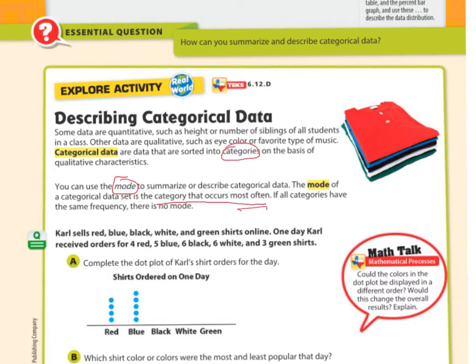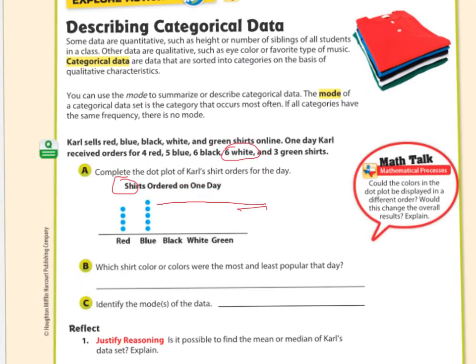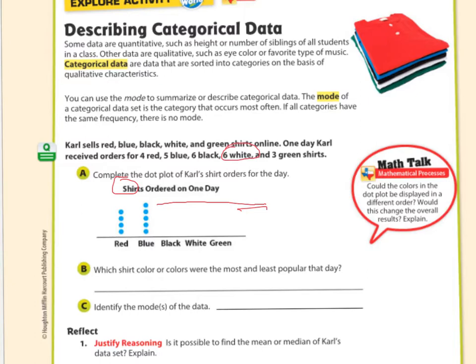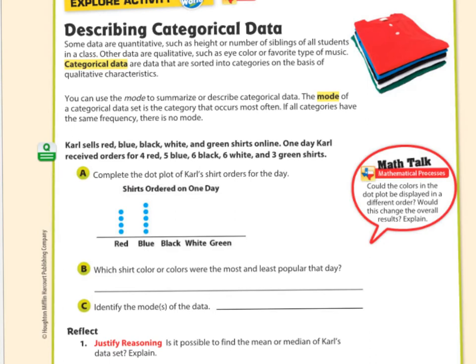Our first example here is that Carl sells red, blue, black, white, and green shirts online. One day Carl received orders for four red, five blue, six black, six white, and three green shirts. So it says complete the dot plot of the orders for that day. They've already done the red and here's the blue, so now it's time for the black.